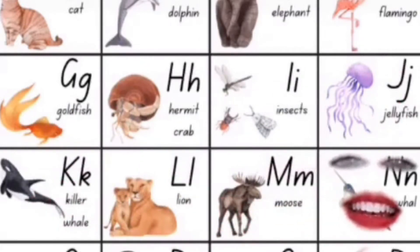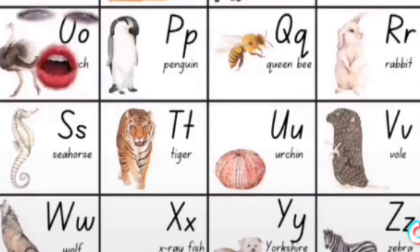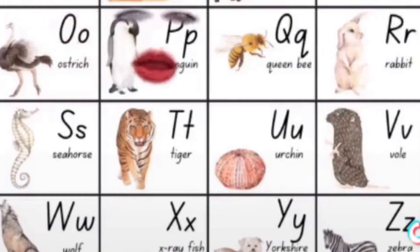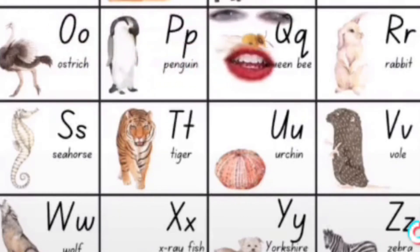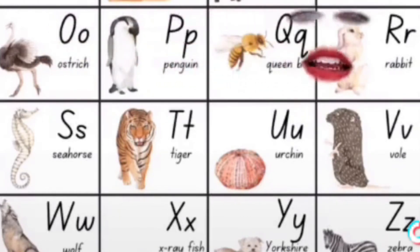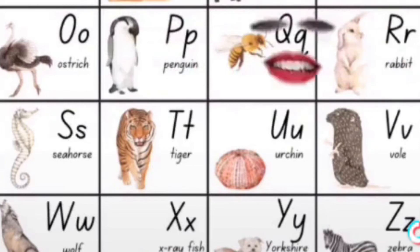N, N, Narwhal. O, O, Ostrich. P, P, Penguin. Q, Q, Queen Bee. R, R, Rabbit.